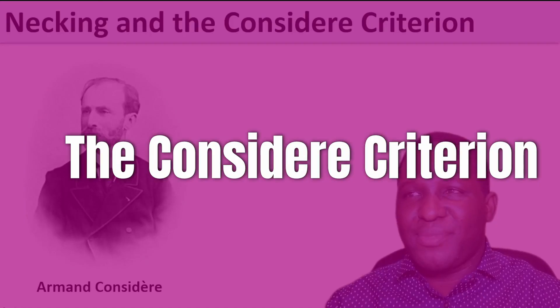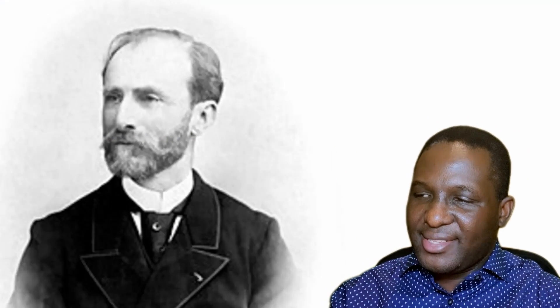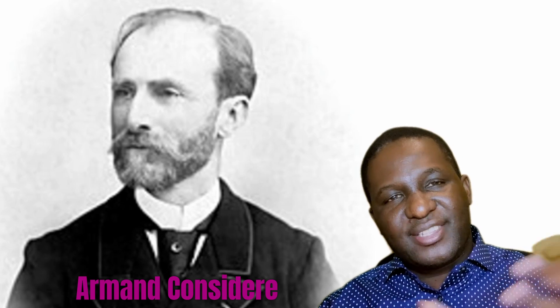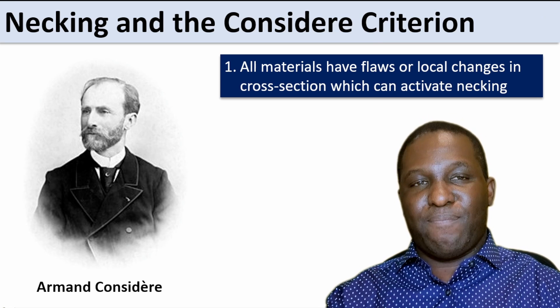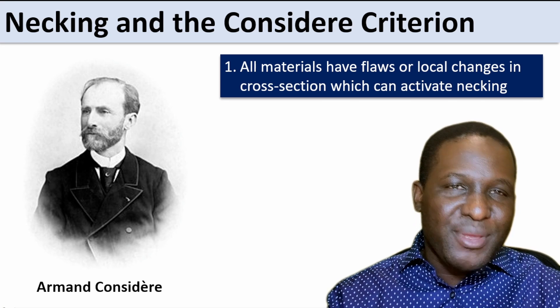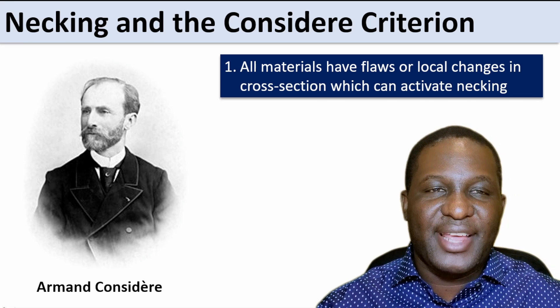The next concept is called the Considère criterion, invented many years ago by Armand Considère, a civil engineer in France. He was working with different kinds of materials and established that for the steel materials he was using, something was happening that led to the presence of necking. He started establishing criteria essential for necking to propagate or initiate. The first of his criteria says that all materials naturally have flaws in them, and the main reason why necking happens is because of the presence of a flaw — which could be in the form of local changes in cross-section — thereby activating necking.